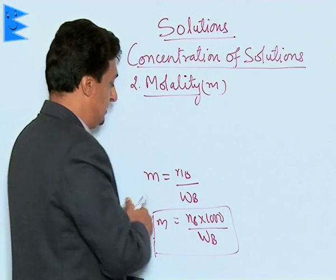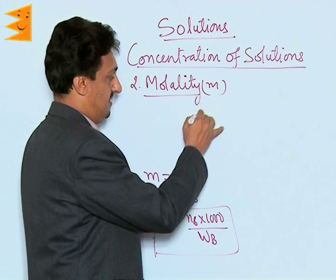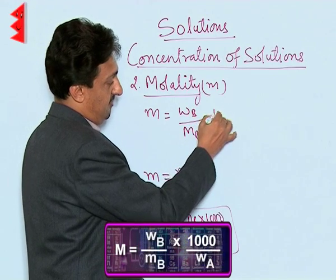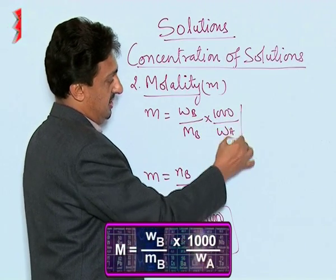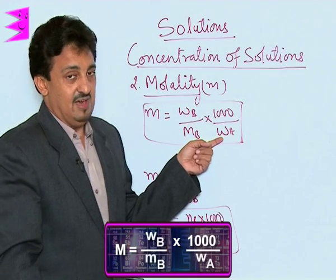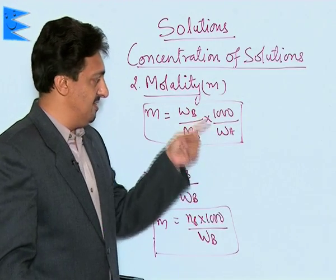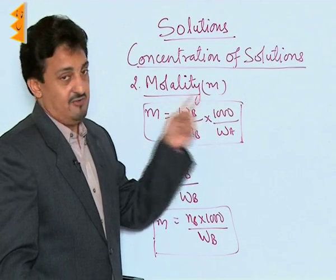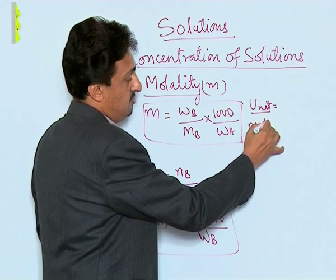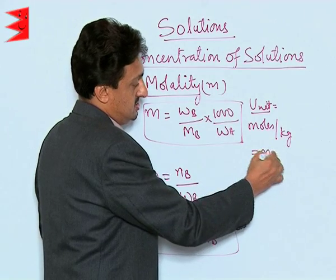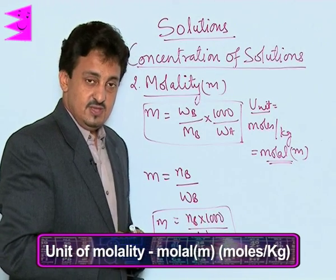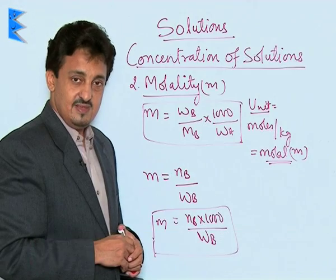Expanding the formula further: molality equals (weight of solute / molar mass of solute) × (1000 / weight of solvent in grams). If the weight of solvent is in kg, we do not include the 1000. The unit of molality is moles per kg, which is called molal, and the symbol is small m.